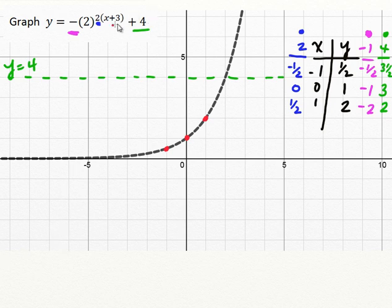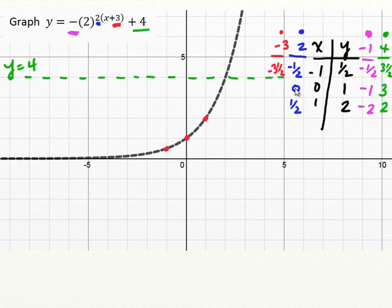For the last step, let's look at the horizontal translation. Because it's associated with the horizontal x direction, it's the opposite of what it appears. It looks like a positive 3, but remember we're looking for x minus something. It's actually x minus negative 3, which is how we got plus 3 — so this is a movement to the left by 3. Negative 1 half becomes negative 3 and a half, 0 becomes negative 3, and positive 1 half becomes negative 2 and a half.